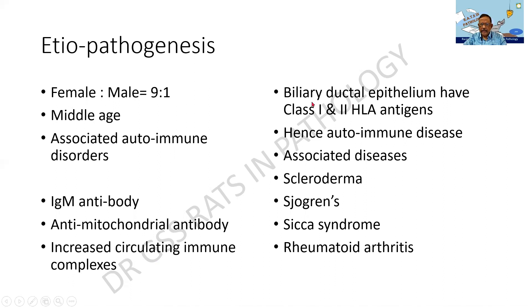Primarily it is a disease of the bile duct epithelium. In this, we find class 1 and class 2 HLA antigens. Since it is a disease against self, it is an autoimmune disorder. There are other associated diseases found in the patient such as scleroderma, Sjögren's syndrome, Sicca syndrome, and rheumatoid arthritis. Sicca and Sjögren's are more or less an overlap.